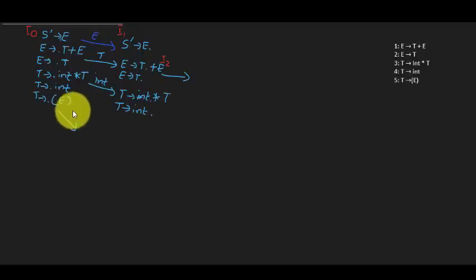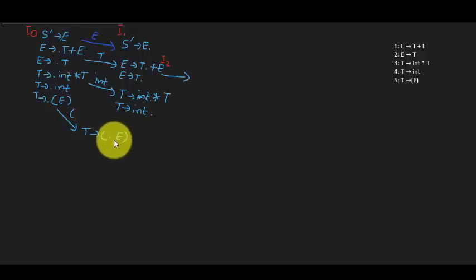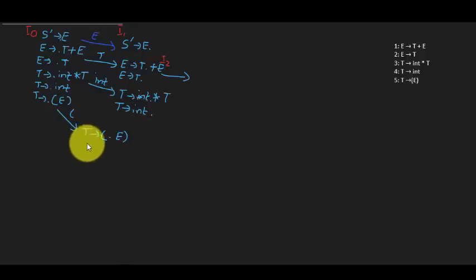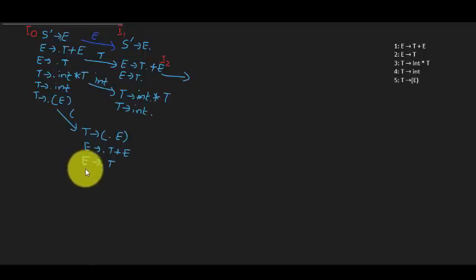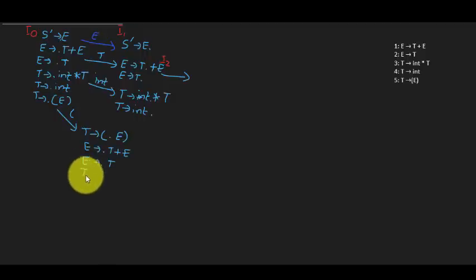For the rule with T → (E), when we have a dot before E again, we must apply closure and bring all the rules of E. Then since there's a dot before T, we bring all the rules of T as well. It's a really tedious process — that's why it's considered more complicated than top-down parsing techniques.